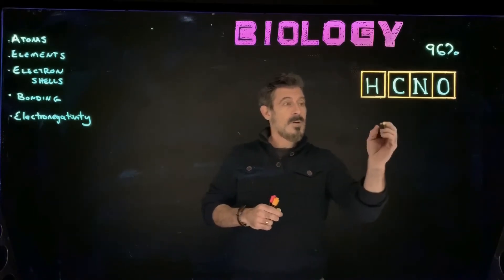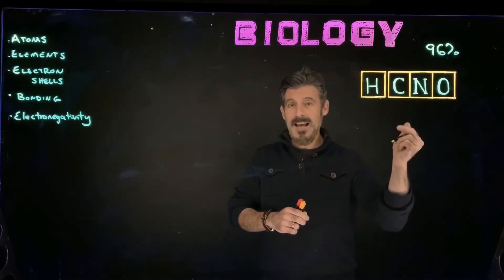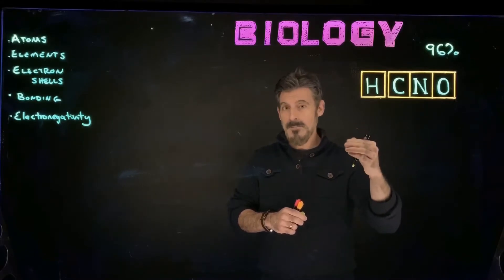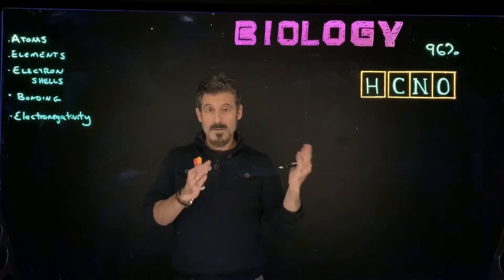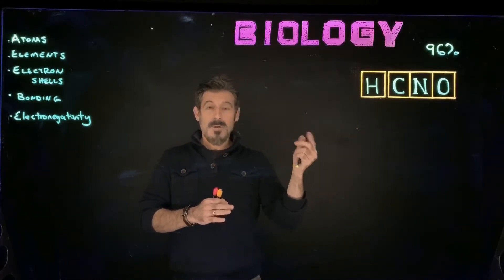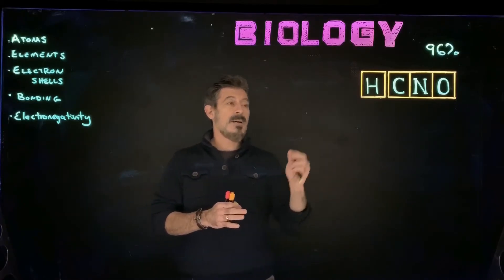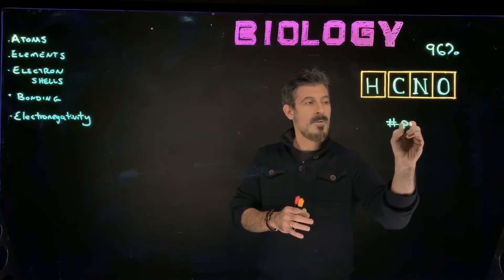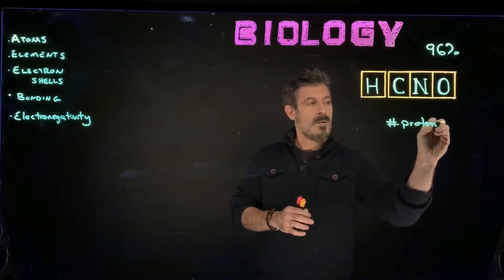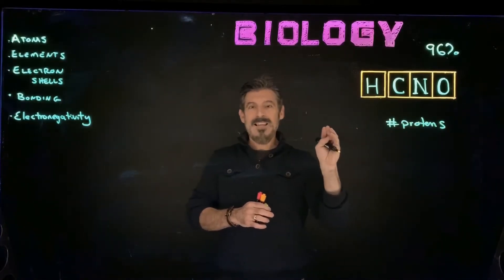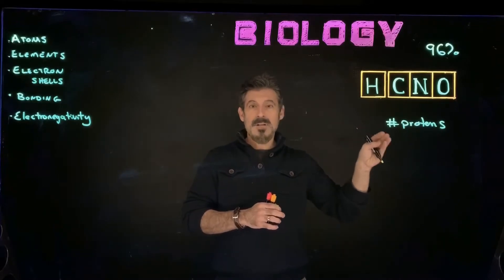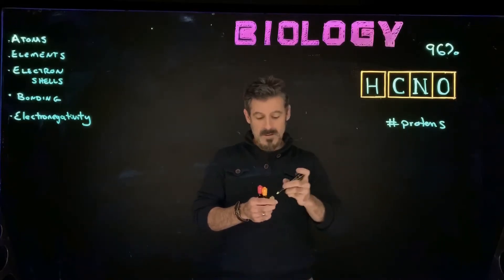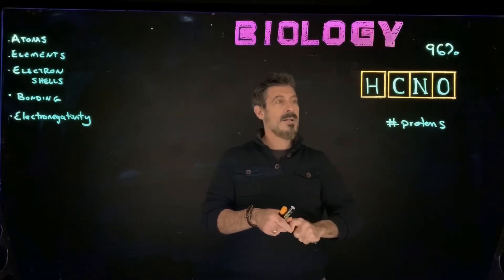So first off, we're going to look at how we define an element. So an atom is the smallest particle of matter, and it's composed of protons, neutrons, and electrons. Now it's the number of protons that are going to define each atom as a particular element. And that's coming from what's referred to as the atomic number.